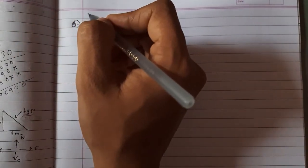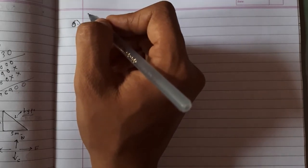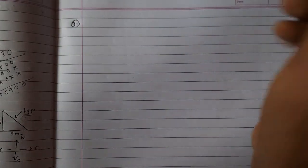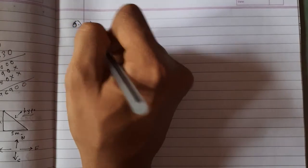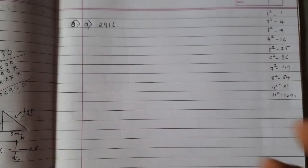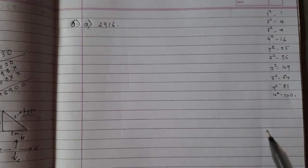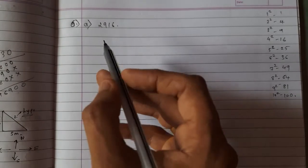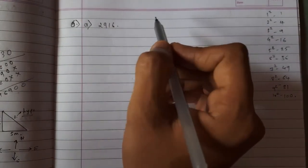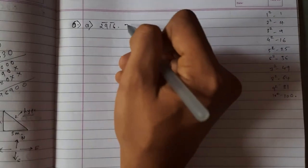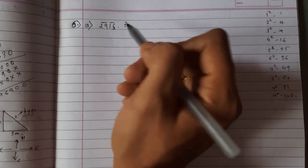Question 6: Estimate the square root of each number by looking at the units digit and the pair of numbers forming the hundreds and thousands places. For 2916: first make groups of two digits. The units digit is 6. Looking at squares of 1–10, 6 appears in the units place of 4² and 6², so the square root's units digit is 4 or 6.